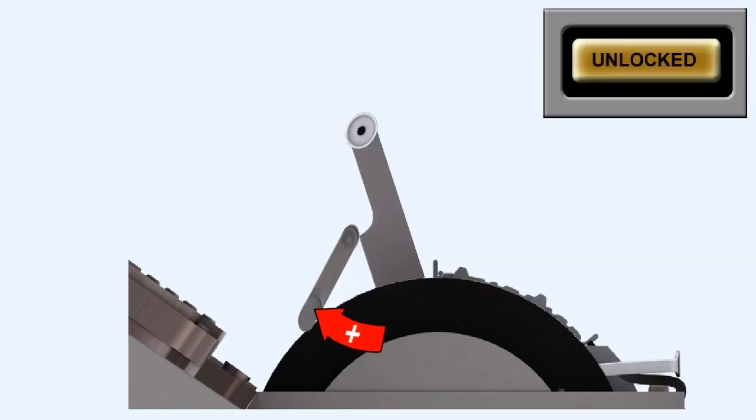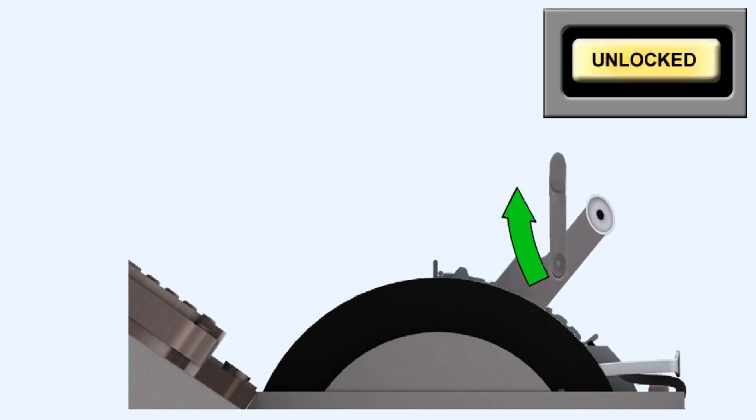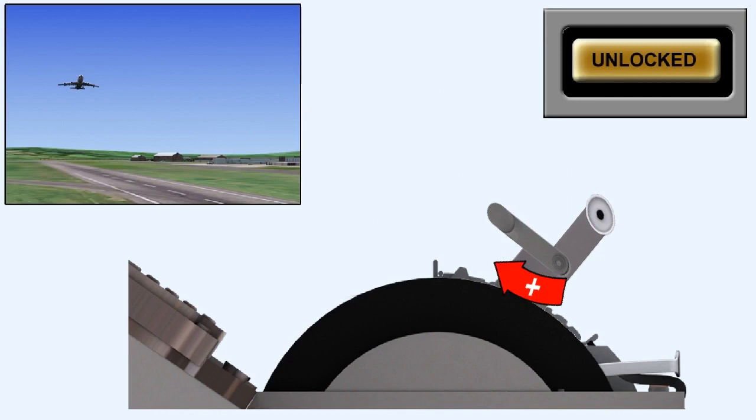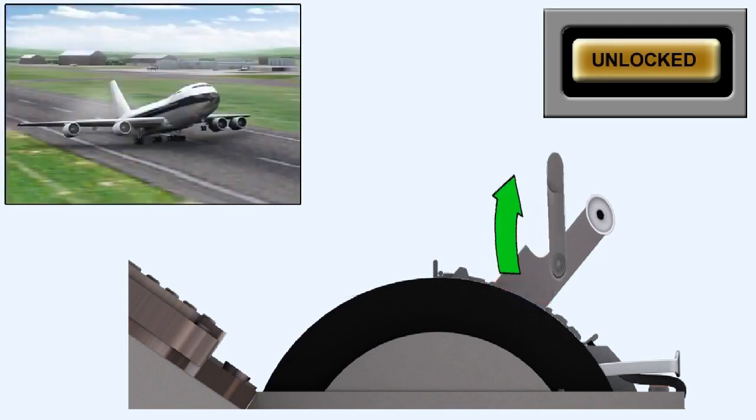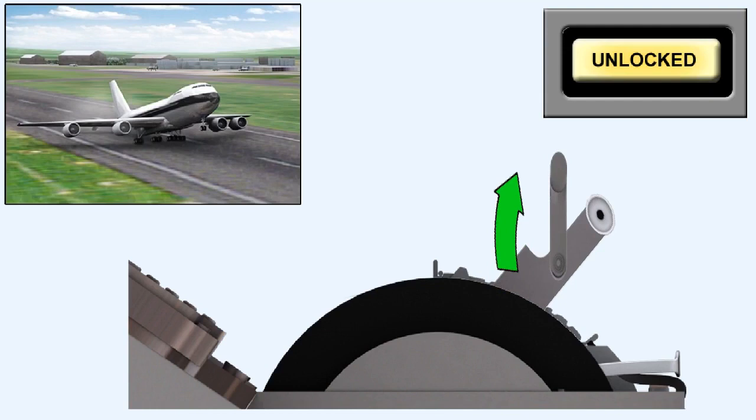Reverse thrust cannot be selected on an engine until the throttle lever of that engine is at idle. Reverse thrust cannot normally be activated on an aircraft until that aircraft is on the ground. This is achieved through the air-ground logic interlock system.